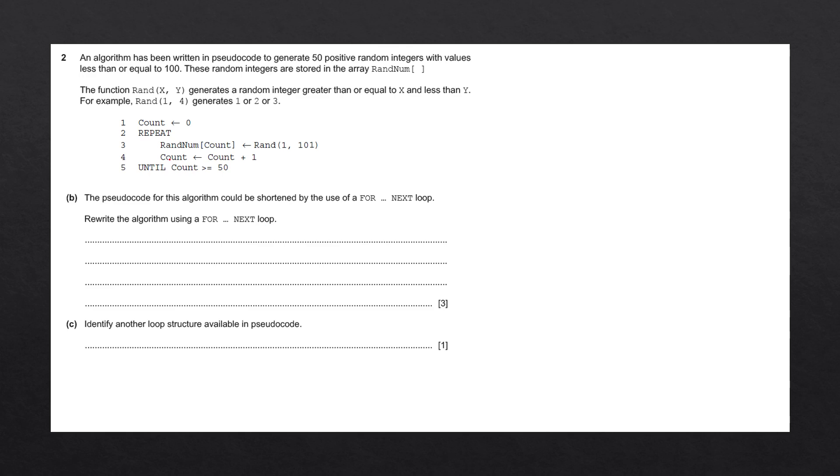We've been given a pseudocode that contains a repeat-until loop. That is going to loop 50 times, generating an array of random numbers between 1 and 100.